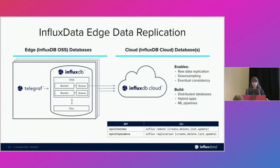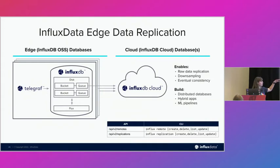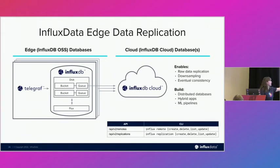To get into the in-depth features and how it works: we have two new API endpoints, remotes and replications, and two new CLI commands also named remote and replication. Each replicated bucket gets that disk-backed queue for buffering data safely in case of disruptions. As you can see in this diagram, Telegraf puts the data into InfluxDB OSS, then from there we have our disk with buckets and queue. Flux is optional — that's for downsampling in particular — and then from there it uploads into InfluxDB Cloud. I'll show the CLI commands; they're pretty much the same as the API.